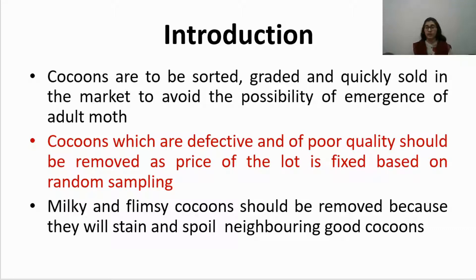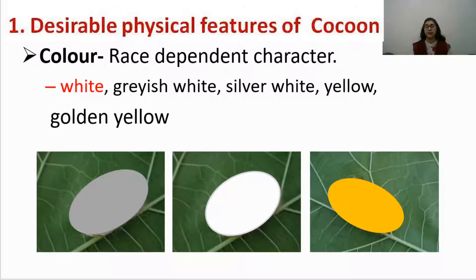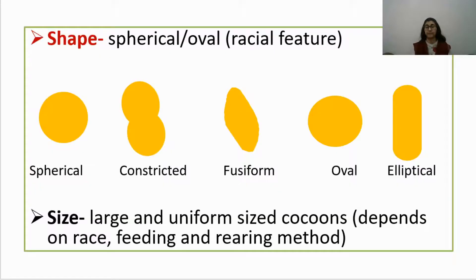Milky and flimsy cocoons should be removed because these cocoons exude fluid, which stains and spoils the neighboring good cocoons. The first desirable physical feature is color, which is race dependent. For example, in Bombyx mori, you find different types: white, grayish white, silver white, yellow, and golden yellow. White cocoons are preferred because the silk obtained is white and can be blended into different colored silk fabrics.